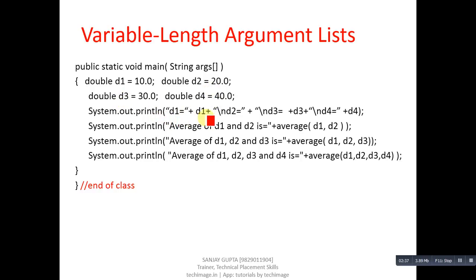In first System.out.println all four variables are printed on console. Here for separation between string and variable I have used plus operator. Then in second println statement I have called average function in which I have passed two arguments d1 and d2.